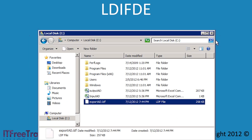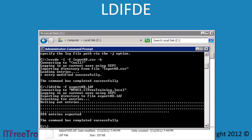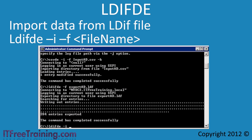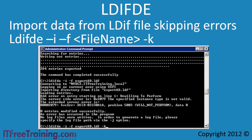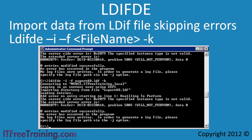To import the file with LDIFDE, just like CSVDE, you use the parameter minus I. Normally you would not import the same data that you just exported in the same domain, but for the purpose of the demonstration, this is how you would import an LDIF file. Just like with the CSVDE command, you can add the minus K parameter and this will ignore any errors it finds and continue processing to the end of the file. This covers the CSVDE and LDIFDE tools. You can see that these tools can be used to automate the creation and migration of Active Directory objects in Windows and other systems.